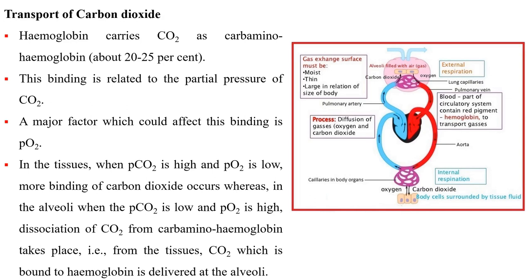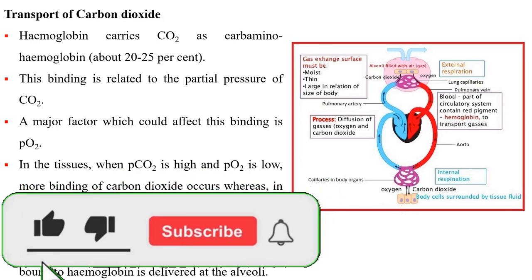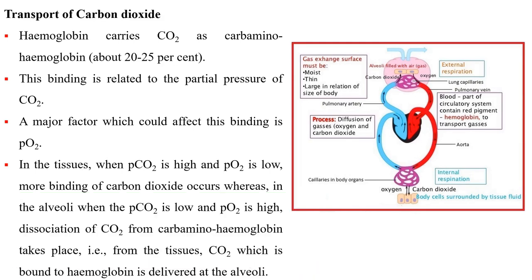Hemoglobin carries carbon dioxide as carbaminohemoglobin, and this binding is related to the partial pressure of carbon dioxide. A major factor affecting this binding is PO₂. In the tissues, when PCO₂ is high and PO₂ is low, more binding of carbon dioxide occurs, whereas in the alveoli, when PCO₂ is low and PO₂ is high, dissociation of carbon dioxide from carbaminohemoglobin takes place. That is, CO₂ bound to hemoglobin from the tissues is delivered at the alveoli.